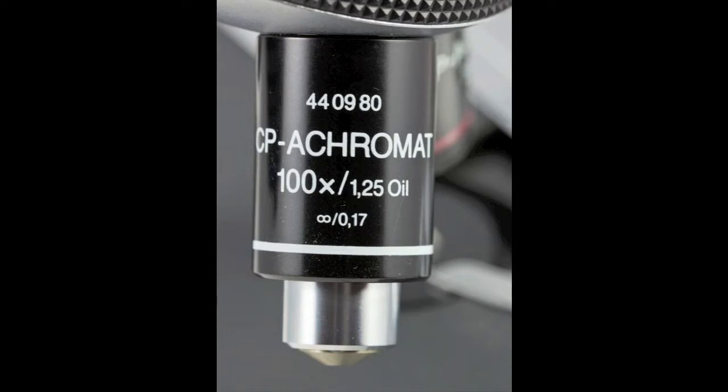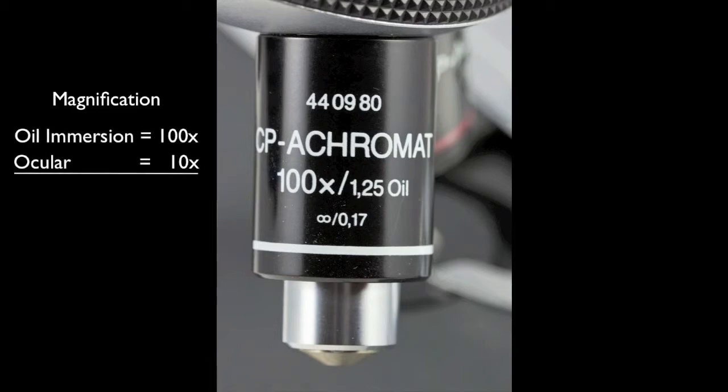The last and most powerful objective lens is the oil immersion lens. This objective magnifies objects 100 times. The ocular magnifies the image 10 times for a total magnification of 1000x.